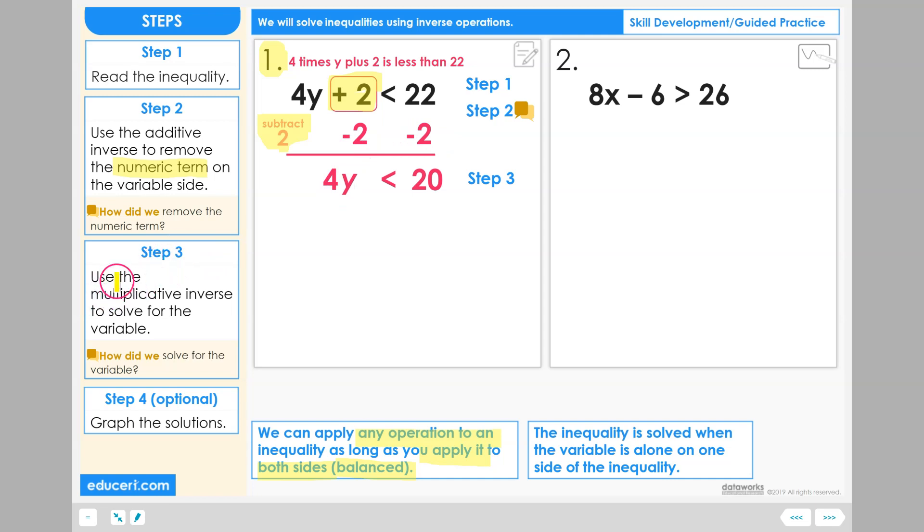Step 3. Use the multiplicative inverse to solve for the variable. We want to get y all by itself. Right now, it has a coefficient of 4 that we want to turn into a 1. The multiplicative inverse is going to be used, and it will be to divide by 4, and we're going to do that on both sides. 4y divided by 4 equals y is less than 20 divided by 4 equals 5, and this is our solved inequality. We read the solution as: solutions are all values less than 5.